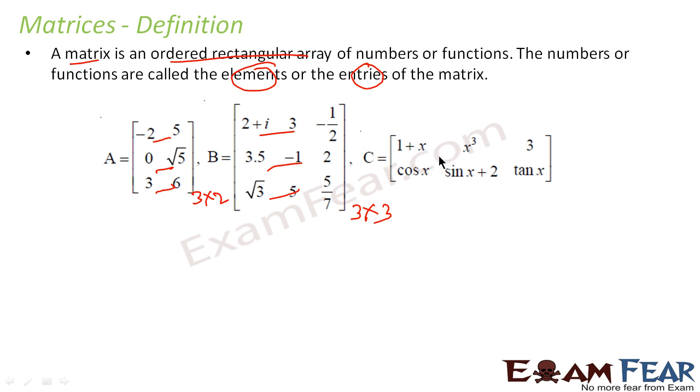This, if you see, is not a number. This is a function x, cos x, x cube. So this is a matrix where the elements are not numbers but it is functions. Here if you see, there are 1 and 2, 2 horizontal sets. So 2 into, there are 1, 2, and 3 vertical sets. So 2 into 3 is the order of this.